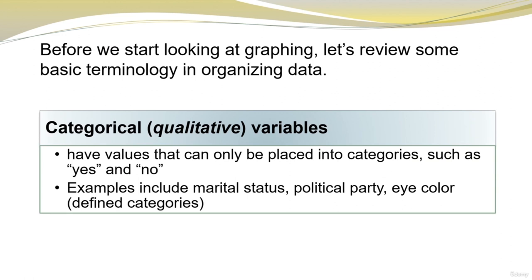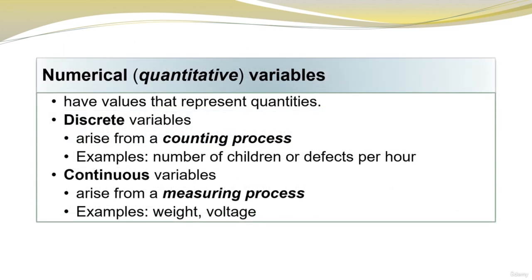Before we start looking at graphing, let's review some basic terminology in organizing data. Categorical or qualitative variables have values that can only be placed into categories such as yes and no — examples include marital status, political party, and eye color. Numerical or quantitative variables have values that represent quantities. Discrete variables arise from a counting process, such as number of children or defects per hour. Continuous variables arise from a measuring process, such as weight or voltage.